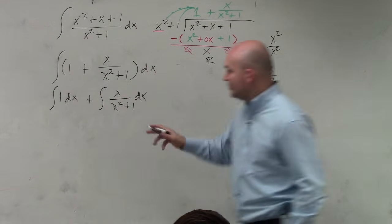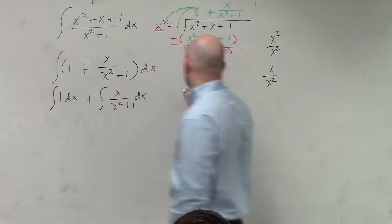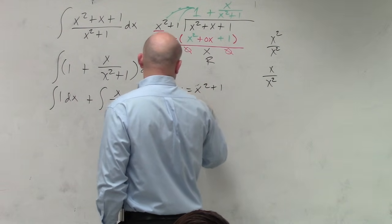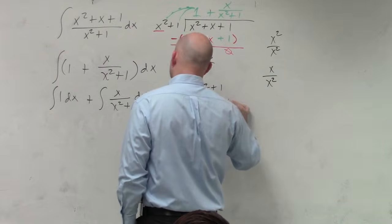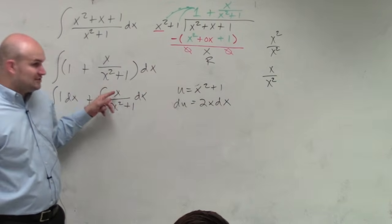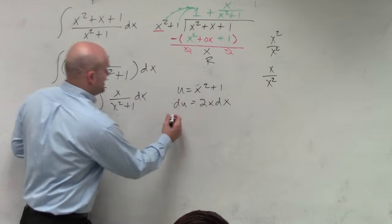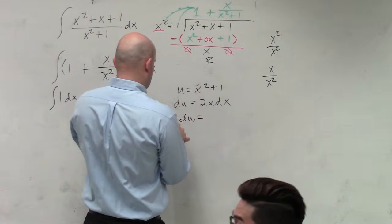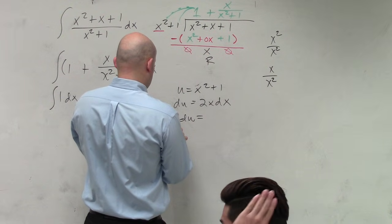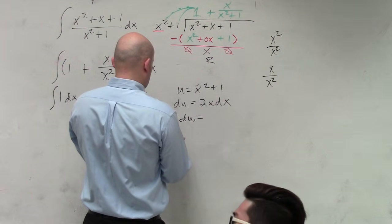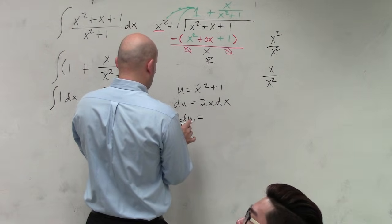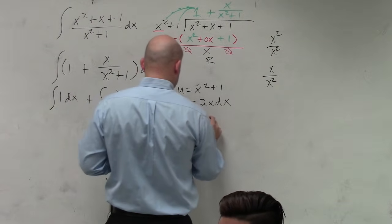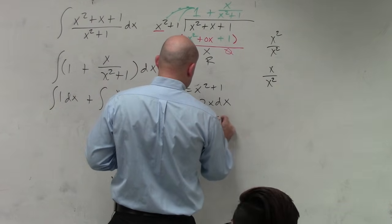Whereas now, I notice that for this, I could use u substitution. So I could say u equals x squared plus 1, du is equal to 2x dx. Where I don't have a 2, but I do have an x. So 1 half du is equal to x dx.